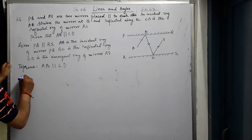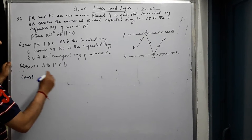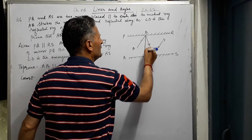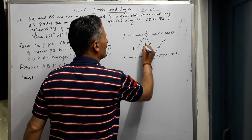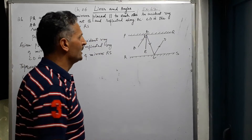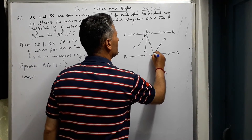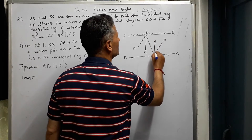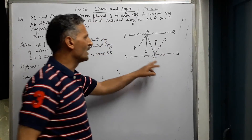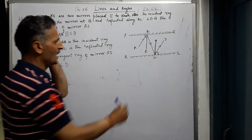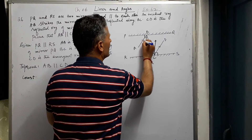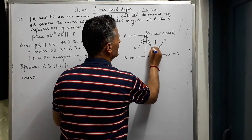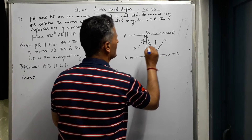We will prove this by construction. We will draw BE perpendicular on mirror PQ, and CF perpendicular on mirror RS. We label the angles: angle 1, angle 2, angle 3, and angle 4 on the figure.